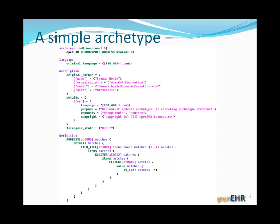The next piece is the language section, saying what language this archetype was originally authored in — obviously it has to be authored in some language. In the description section there's a lot of what most people might think of as metadata: information about the original author, details about the archetype, life cycle state, and so on. The definition section comes next, and that's the interesting mathematical bit — that's where all the semantics of the archetype are.